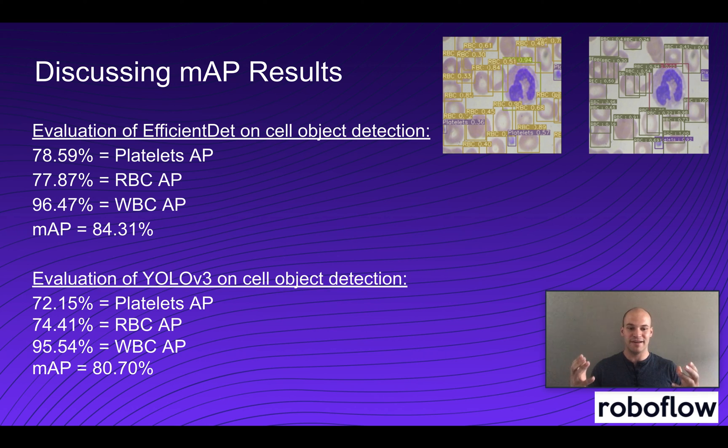So in summary, we have done a deep dive here of what the MAP metric is for computer vision. It is a very effective way to look at results across your entire test data set and decide which model is better than another.